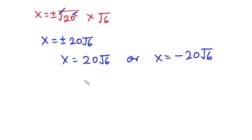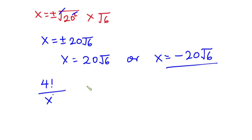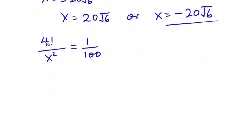Now let's go ahead and verify this value. I'll be testing the negative one, because if this works, then the positive one will definitely work. So we have the equation: 4 factorial over x squared should equal 1 over 100. We know 4 factorial is 24, and x is negative 20 square root of 6, squared.